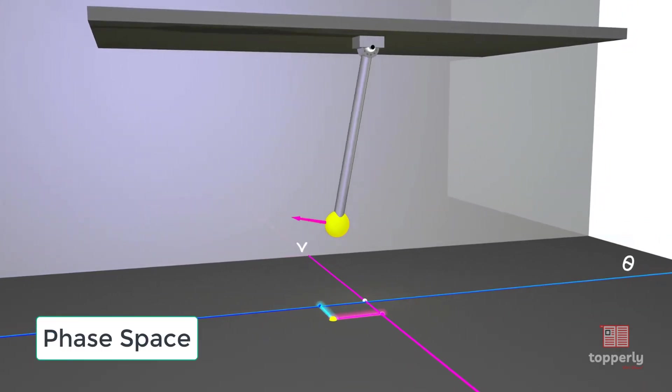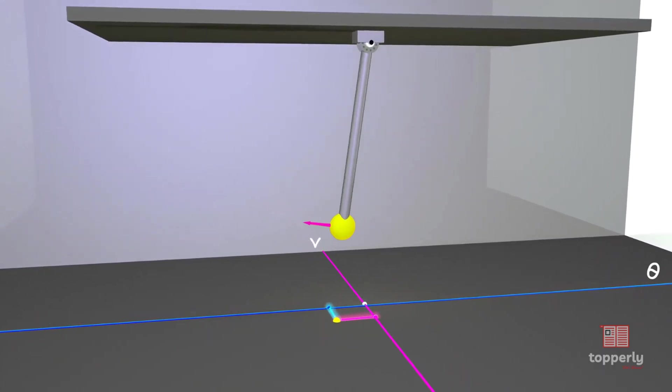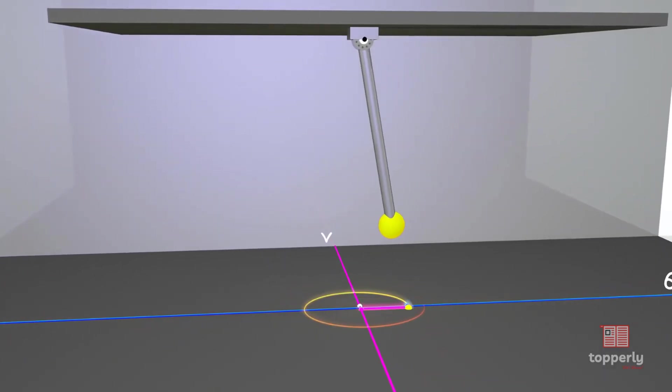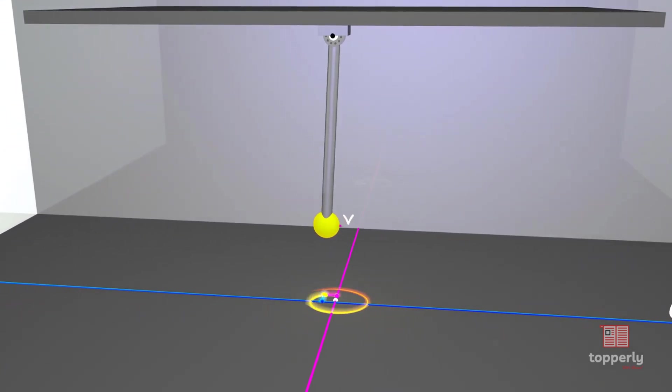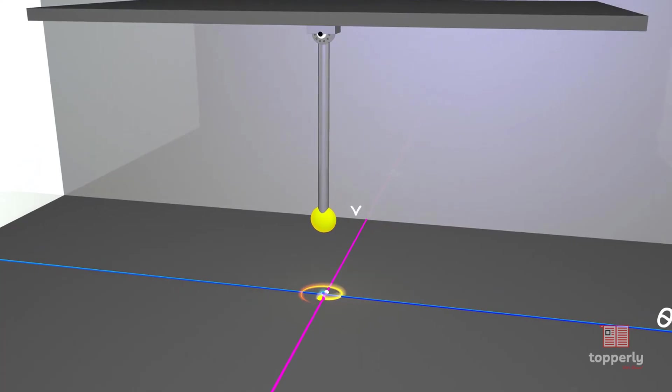If the pendulum has friction, it will eventually slow down and the angle of the pendulum decreases with each swing. This can be seen in the phase space as an inward spiral boxing towards the origin, which we know as an equilibrium state of the pendulum.